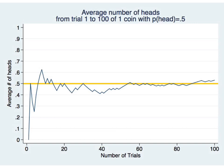Another observation is that as we approach the theoretical probability, we don't necessarily approach it from below or from above. The first plot we looked at approached from below, another approached from above, and here's one that actually approaches by wavering back and forth — sometimes the observed probability after a certain number of trials is above the theoretical probability, sometimes below, and it just keeps fluctuating as it gets close to the expected probability.